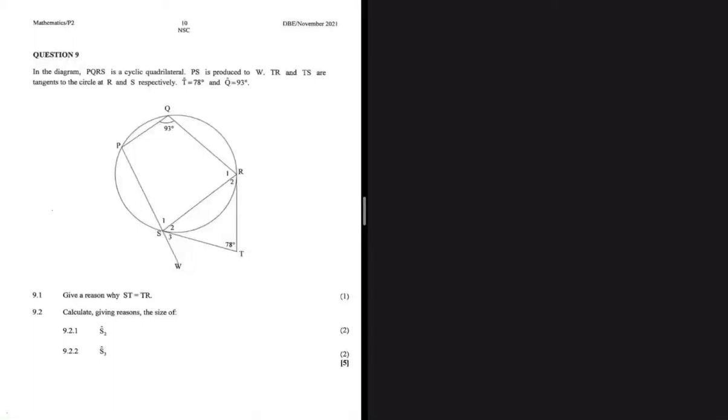We are told that PQRS is a cyclic quadrilateral. PS is produced to W, and TR and TS are tangents to the circle at R and S respectively. T equals 78 degrees and Q equals 93 degrees. Question 9.1 asks: give a reason why ST equals TR.